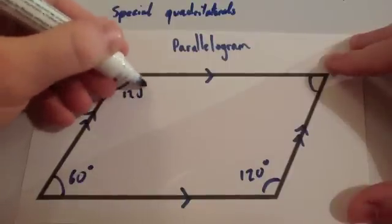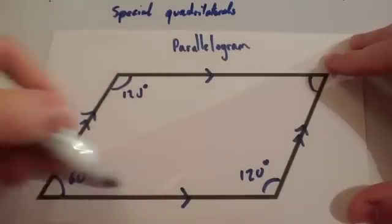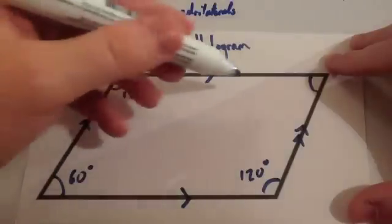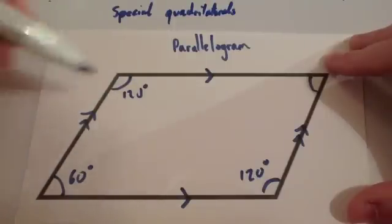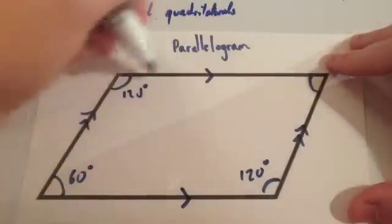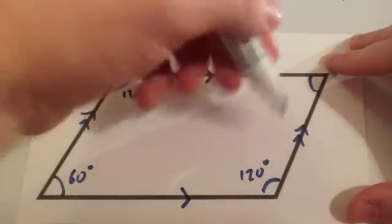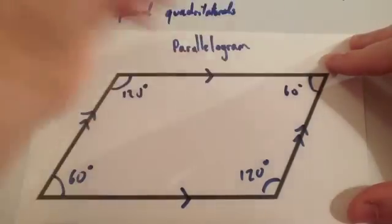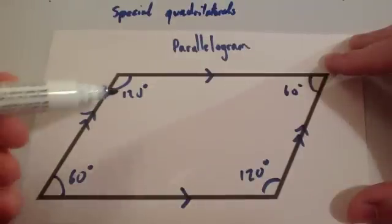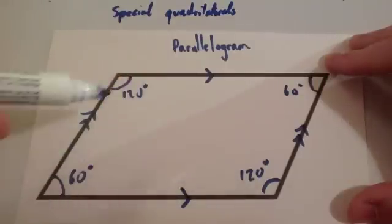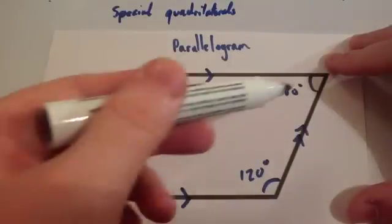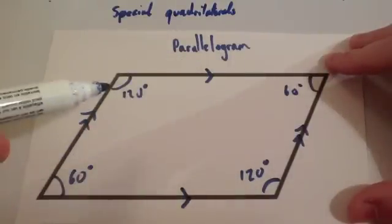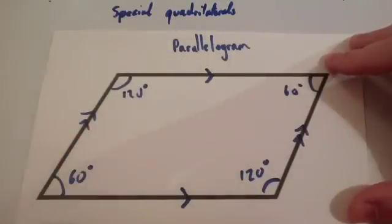The co-interior angle relationship applies across both pairs of parallel lines in the parallelogram. From this it follows that opposite angles are equal to each other: if one angle is 60, the opposite is also 60; if one is 120, the opposite is also 120. So the angle properties of a parallelogram are: adjacent angles add to 180 degrees, and opposite angles are equal.